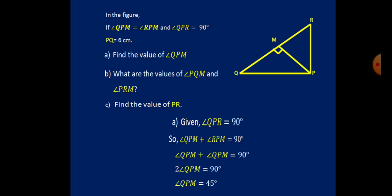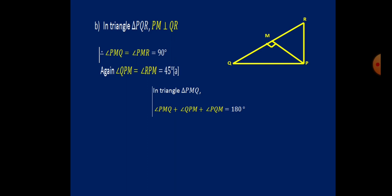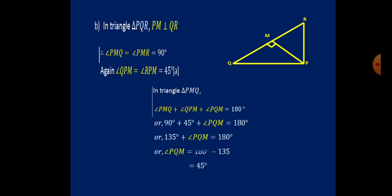For part two, in triangle PQR, PM is perpendicular to QR, so angles PMQ and PMR are each 90 degrees. Also, QPM and RPM both equal 45 degrees from part one. In triangle PMQ, the three angles sum to 180 degrees: 90 + 45 + angle PQM = 180, so angle PQM = 45 degrees. Similarly, angle PRM is also 45 degrees.